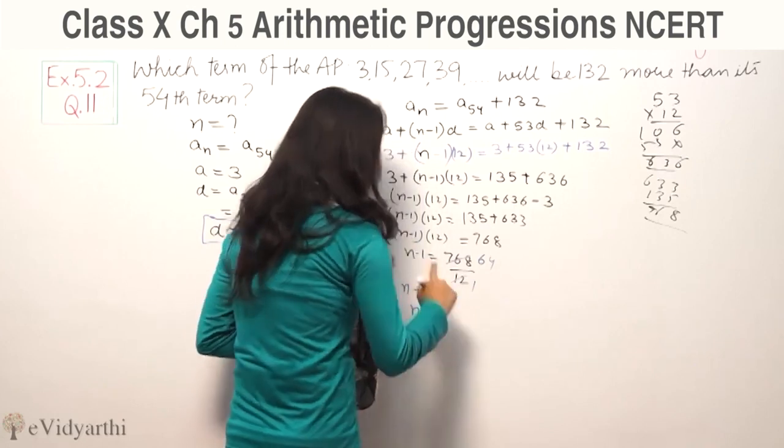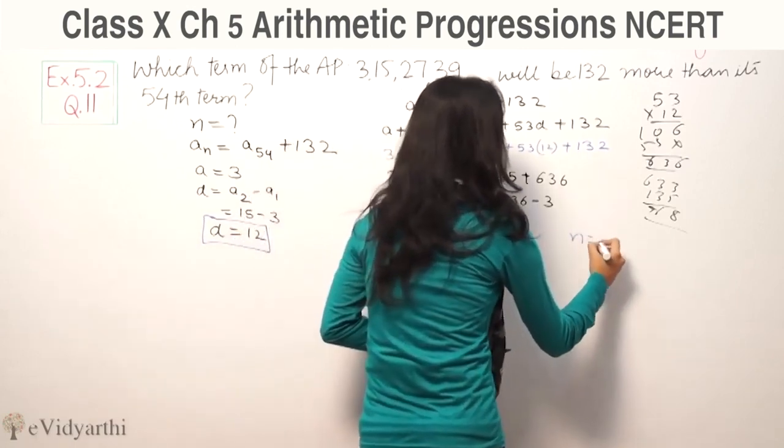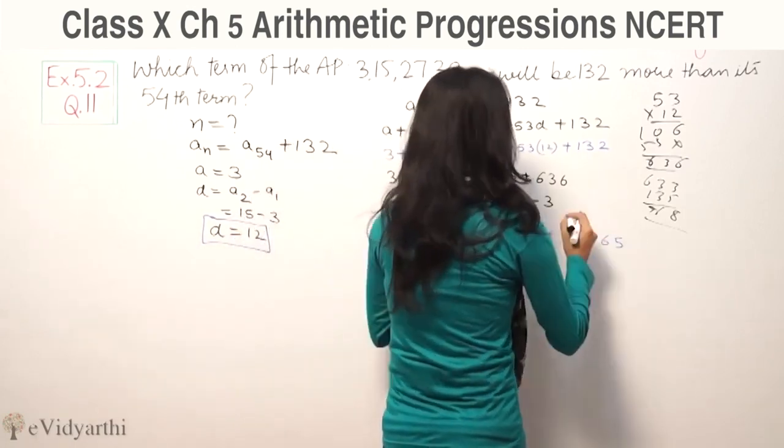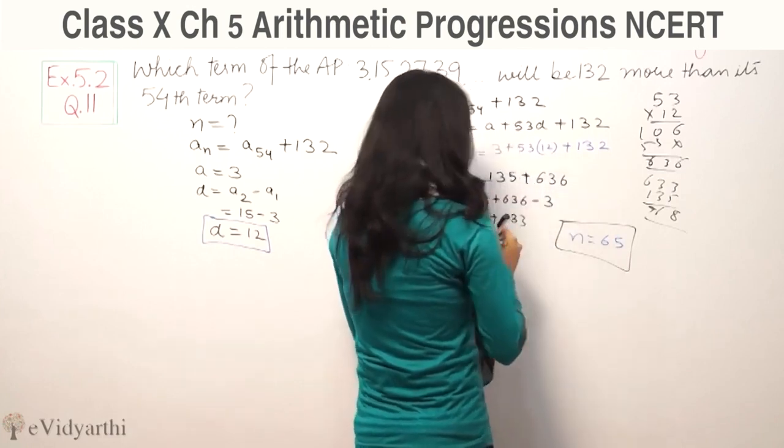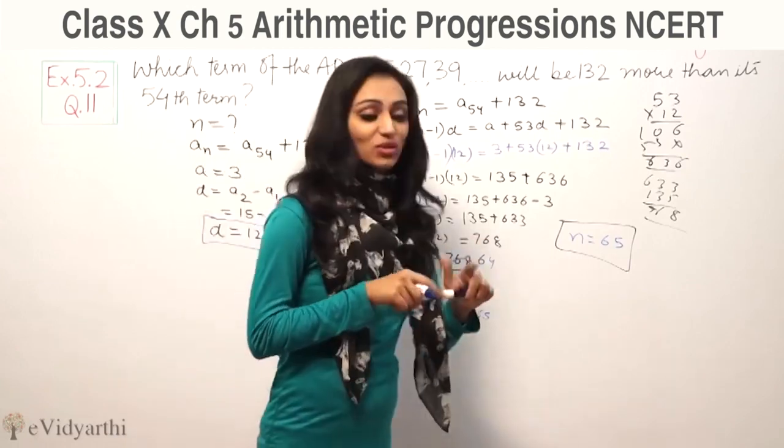So n equals 64 plus 1, which gives us n equals 65. The 65th term is 132 more than the 54th term.